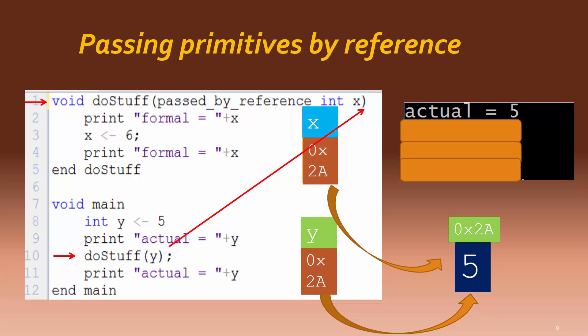When the actual parameter is passed, it is the memory location that is passed, not the value itself. And so both formal and actual parameters are now referencing or pointing to the same value. The value of x is printed and then changed and output again.